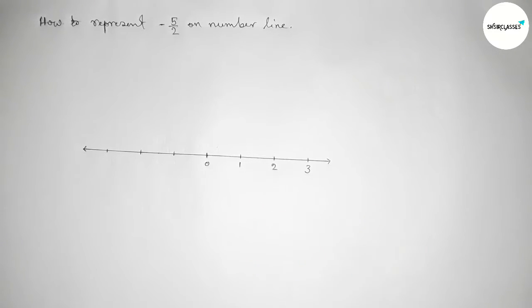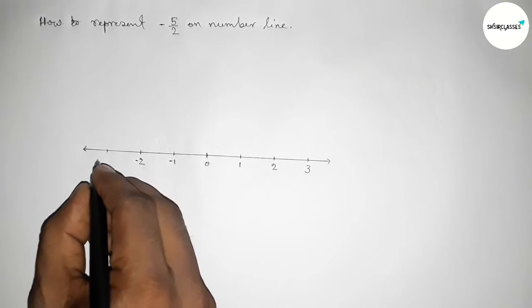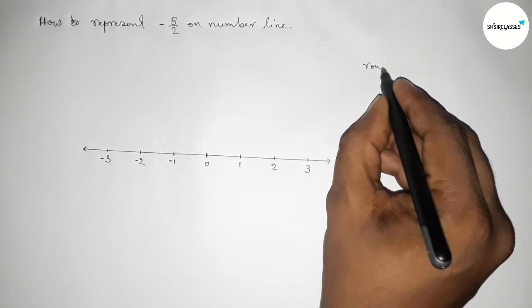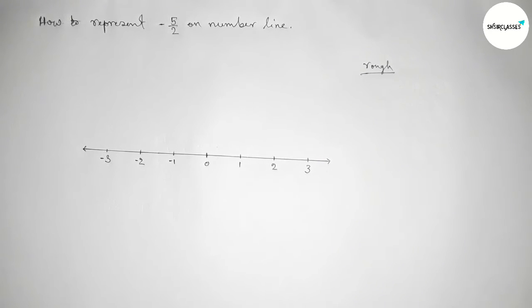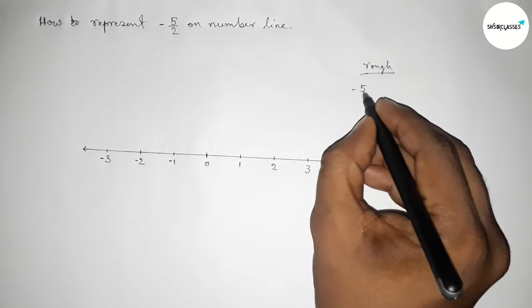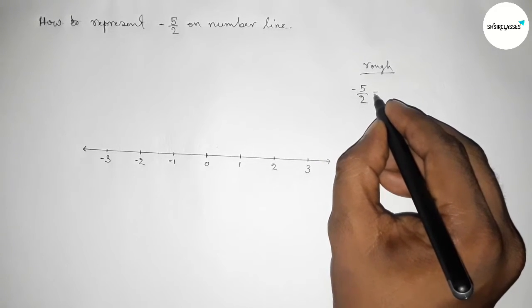Now roughly discussing some important calculation here. So now here minus five by two equals to, we can write it by this way, so we can write here minus two and minus one by two.